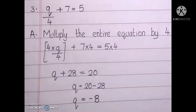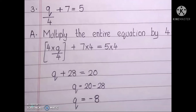Let's go to the third question: Q by 4 plus 7 equal to 5. Which is the denominator here? 4 is the denominator. So you are going to multiply the entire equation by 4. Here you can see the steps. The final equation you get is Q plus 28 equal to 20. Transposing gives Q equal to 20 minus 28, so you will get the answer as negative — Q equal to minus 8.